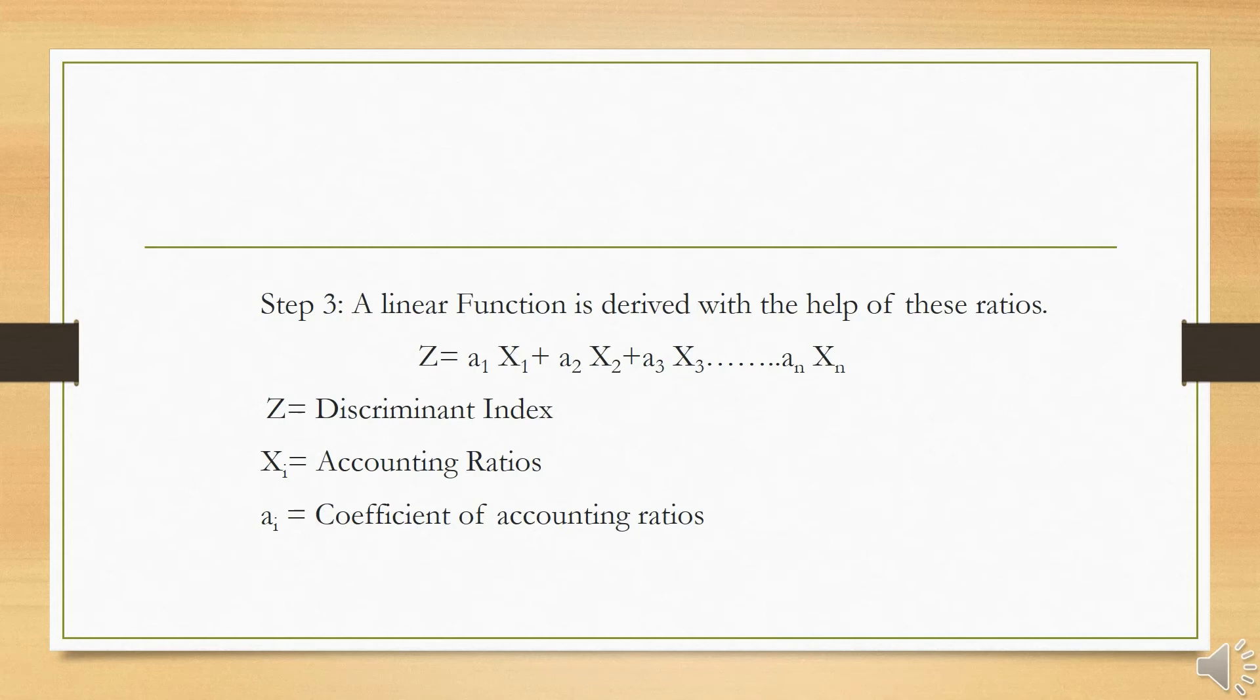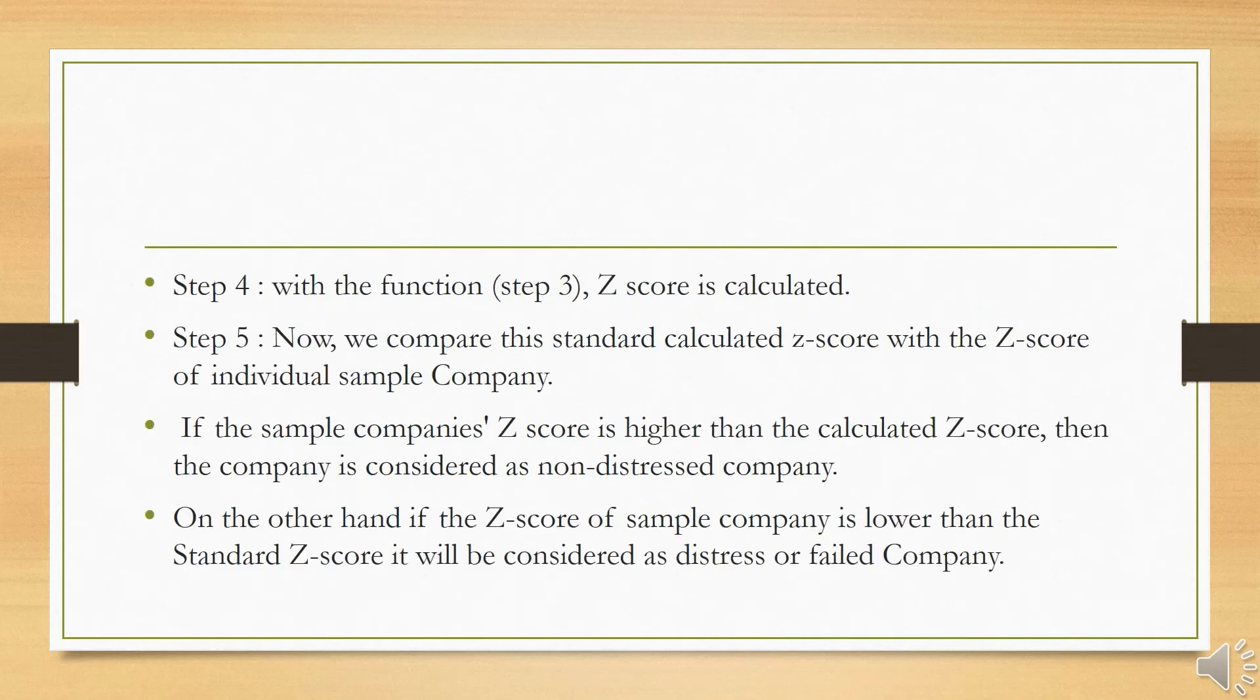All the X's are the accounting ratios that we calculated in the second step. All the A's stand for the coefficient of accounting ratios. In the following step, we calculate the Z-score with the help of the linear function that we derived in the previous step. Now we compare this calculated Z-score with the Z-score of individual companies.